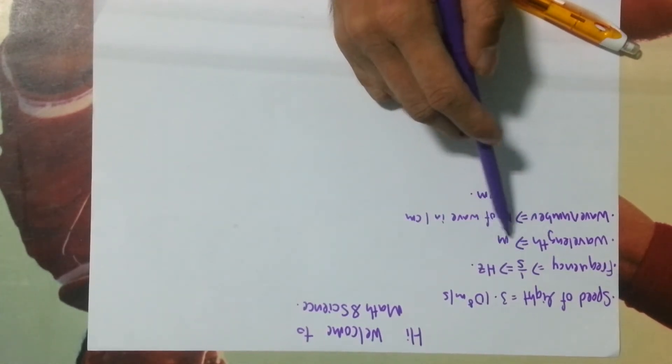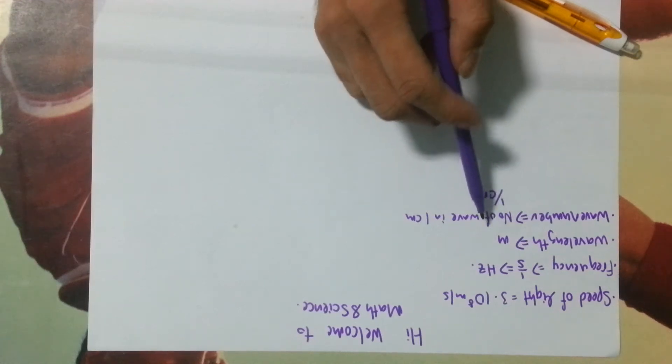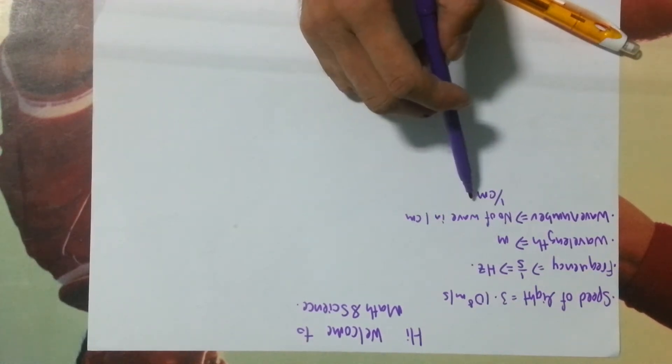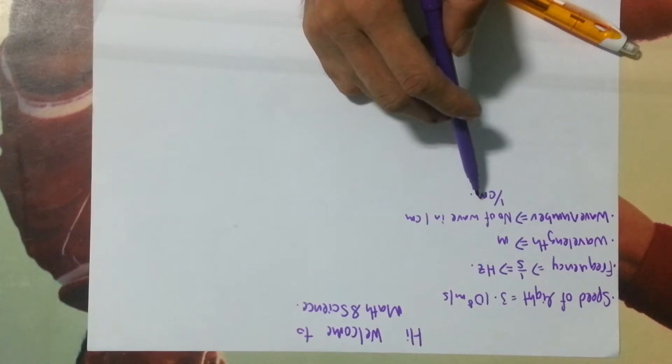The unit is hertz. Wavelength, the unit is meter. Wave number is equal to the number of wave in 1 centimeter.